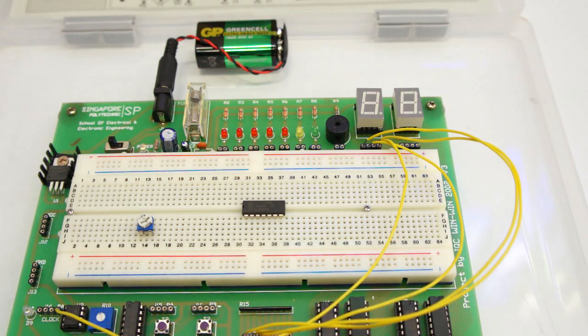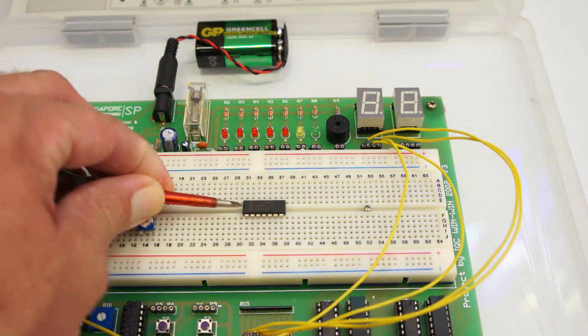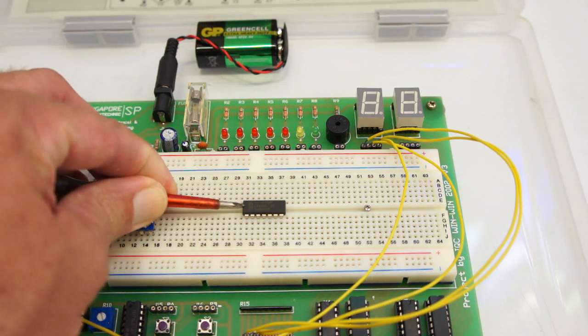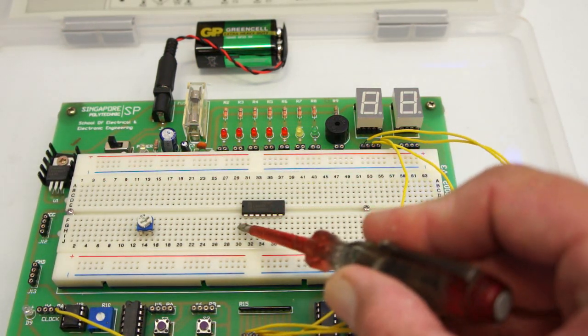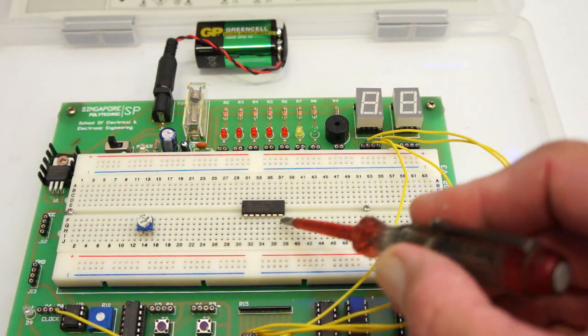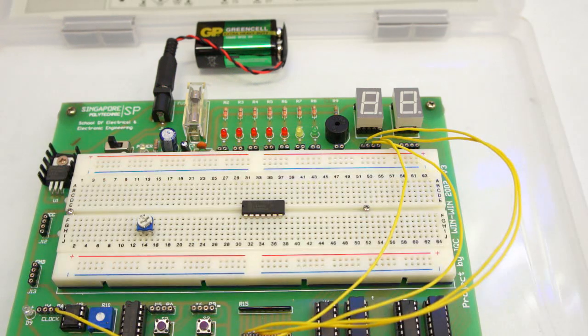Another thing we need to do: let's follow the convention of having the IC with a little notch cut out on the left-hand side. That means the pins are numbered one, two, three, four, five, six, seven, eight, nine, ten, eleven, twelve, thirteen, fourteen.